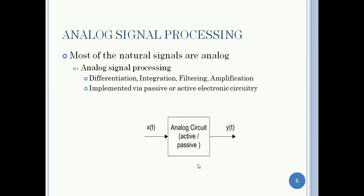In the analog signal processing domain, the main components used are active or passive electronic circuitry. The various types of signal processing functions which can be applied using these circuitries are differentiation, integration, filtering, amplification, etc. All these signal processing operations are carried out on naturally occurring analog signals. Hence this domain of signal processing is termed analog signal processing.